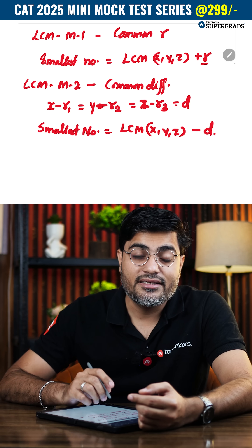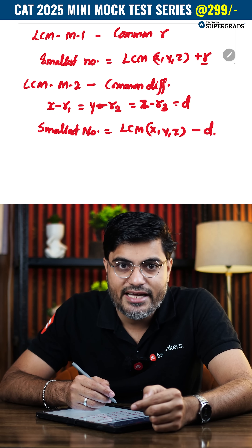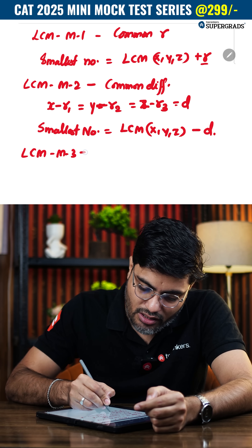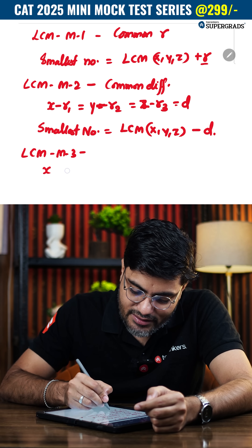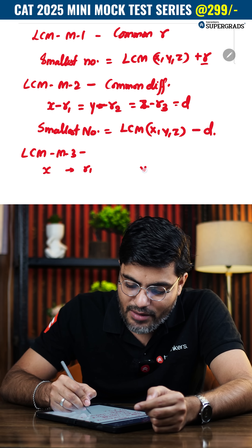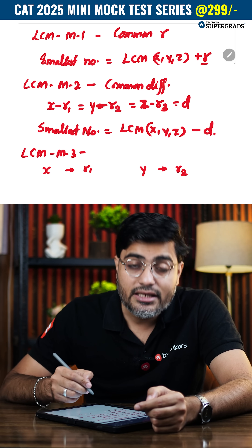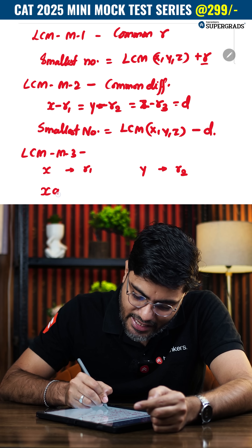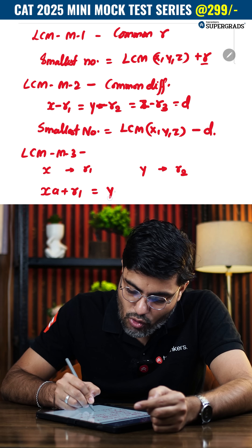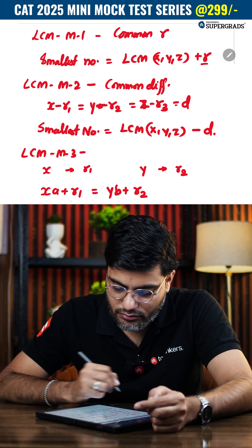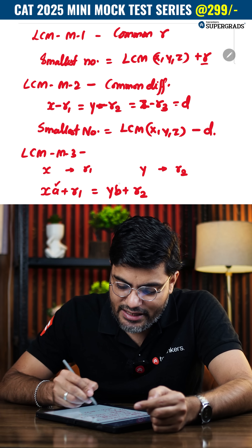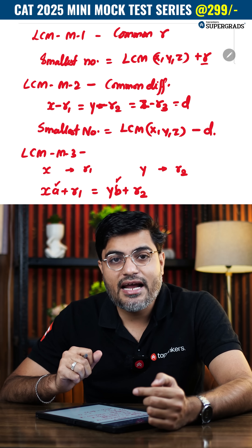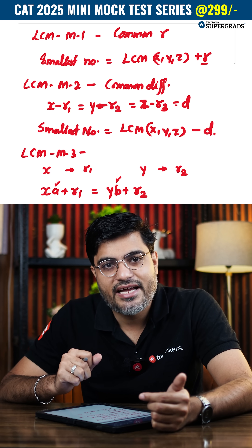The last model, also known as the Chinese Remainder Theorem, is LCM Model 3. It says: if you divide by x you receive remainder r1, and when you divide by y you receive remainder r2, then the common remainder can be obtained using the equation x·a + r1 = y·b + r2. You have to find the values of a and b that satisfy this equation, and hence you will arrive at a remainder known as the Chinese remainder. Thank you.